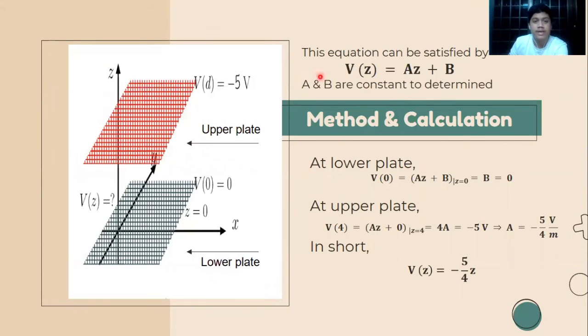By using the equation earlier, this equation can be satisfied as V(z) = Az + B, where A and B are constants to be determined.